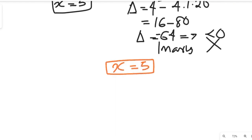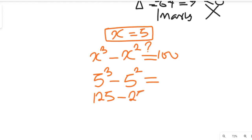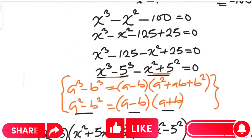Now let's verify. We substitute x equals 5 into x to the power of 3 minus x to the power of 2. We get 5 to the power of 3 minus 5 to the power of 2, which is 125 minus 25, and if we subtract them we get 100. So x equals 5 satisfies the original equation, confirming it is the correct solution.